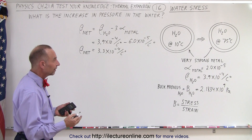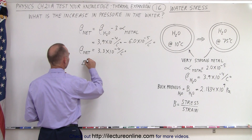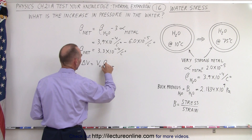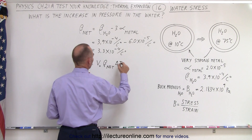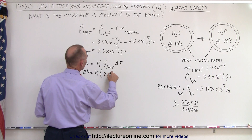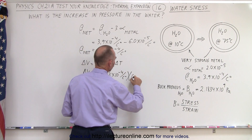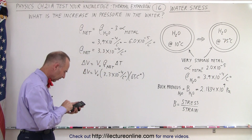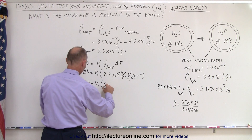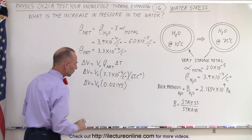Now we're going to calculate the net change in volume. We're going to find delta V, which is going to be the original volume times the net volume coefficient times the change in temperature. So delta V equals V-initial times 3.3 times 10 to the minus 4 per centigrade degree, multiplied by 65 centigrade degrees. We get delta V equals V-initial times 0.02145. The centigrade degrees cancel out.